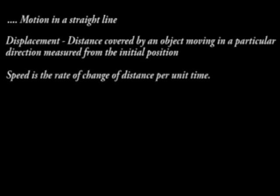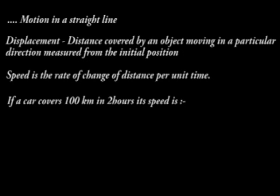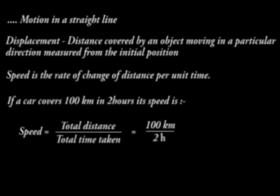Speed is the rate of change of distance per unit time. If a car covers a hundred kilometers in two hours, its speed is total distance over total time taken, which is 50 kilometers per hour. Other units of measuring speed is meters per second.